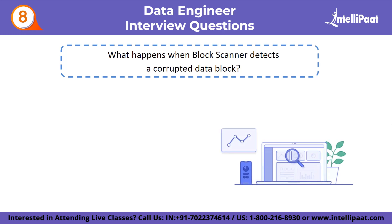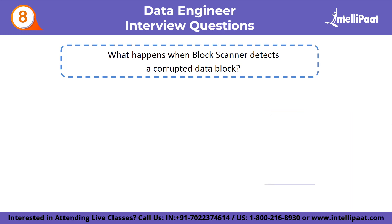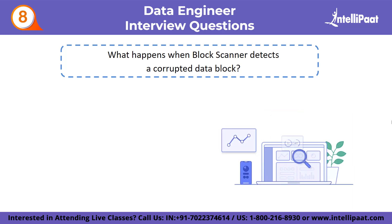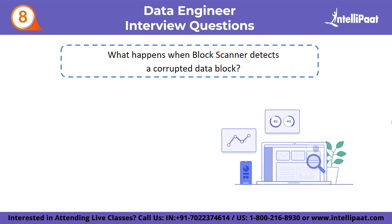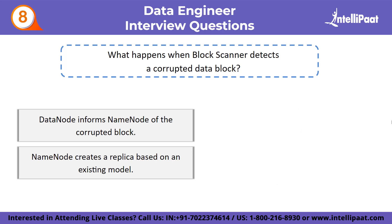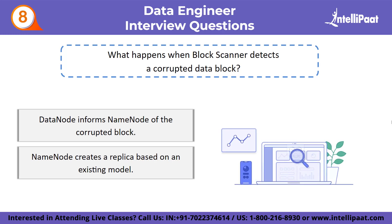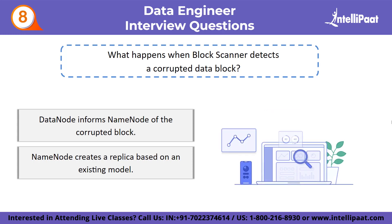Eighth question: what happens when a block scanner detects a corrupted data block? You should respond by listing all the steps taken by a block scanner when it discovers a corrupted block. First, the data node informs the name node of the corrupted block. Then, the name node creates a replica based on an existing model. If the corrupted data block is not deleted by the system, the name node creates replicas based on the replication factor.